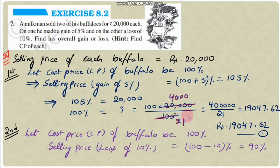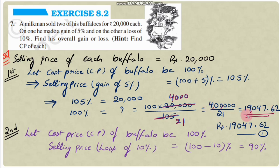4 lakhs divided by 21 gives 19,047.62. So the cost price of the first buffalo is rupees 19,047.62.